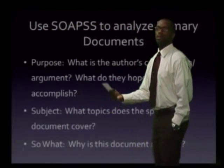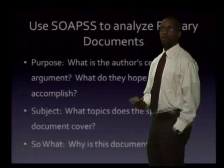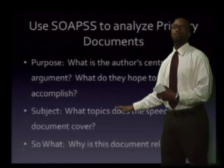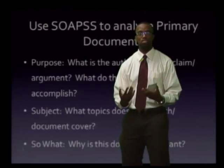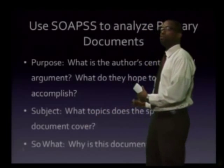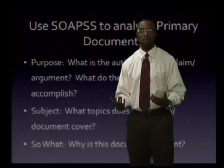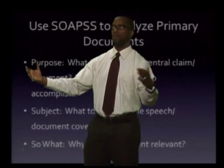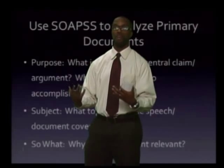Purpose — what's the author's central claim? What's their argument? What do they hope to accomplish? Why was the document written? Next, subject — what is the document all about? This is where we read it more carefully and closely to understand what the document is saying. And then the last S, which is very important for the historian — so what? Why does this even matter? Where does this document fit in our larger arguments about the historical narrative of American history, of African American history, whatever history it is that we're studying?